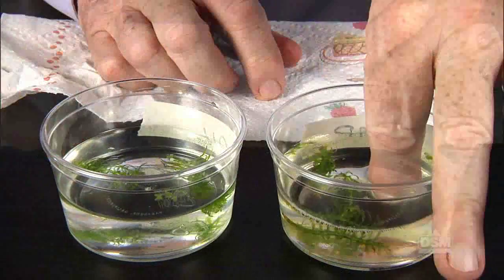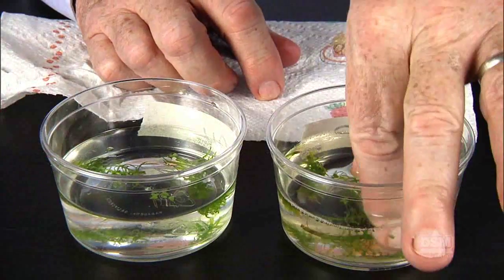Inform students that the water in their dishes has now been polluted, although the particular substances in these dishes are harmless for them to touch with their fingers. Ask them to dip their fingers in each dish and observe how each liquid feels. Students will observe that the water in the dish containing oil feels slimy, and the water in the dish of detergent feels slippery.